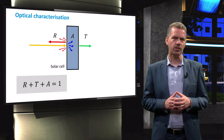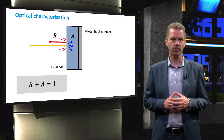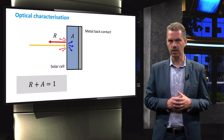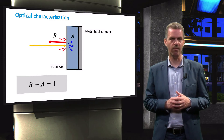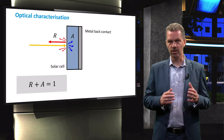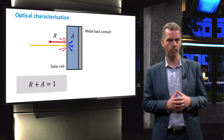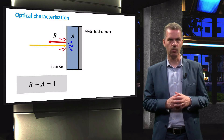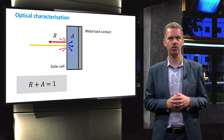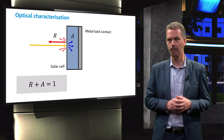When we take a solar cell with a fully metallised aluminium or silver back contact, which has a reflectance of almost unity for longer wavelengths, the transmission term can be neglected. This simplifies the relation between reflection and absorption, and it is clear that in order to couple as much light into the solar cell as possible, the reflectance of the solar cell should be minimised.